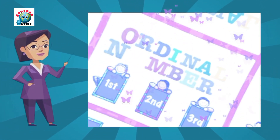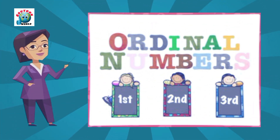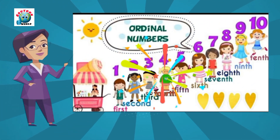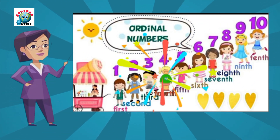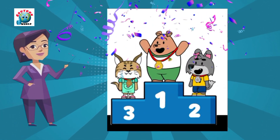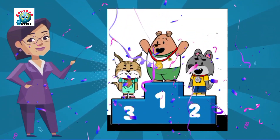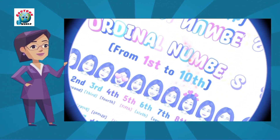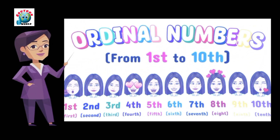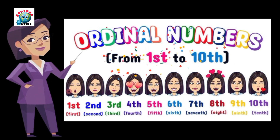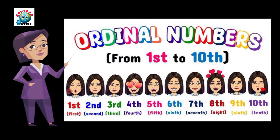In this video we will learn about ordinal numbers. An ordinal number is a number that tells the position or order of something in a list. For example: first, second, and third. Ordinal numbers show rank or sequence rather than quantity. So while cardinal numbers like one, two, three tell how many, ordinal numbers tell which one in a series.